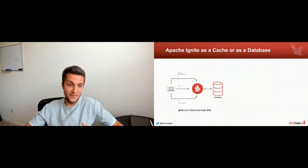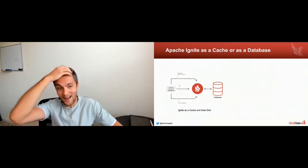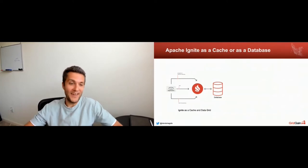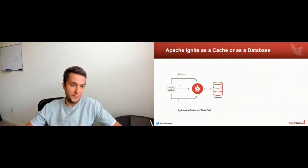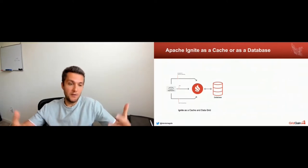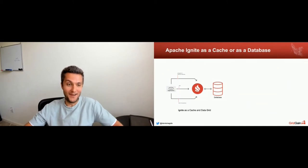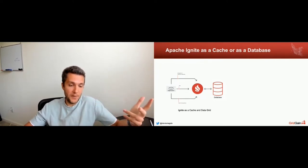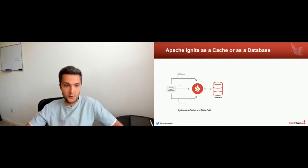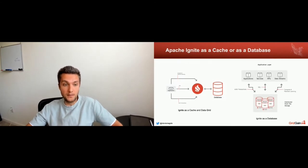There are two primary Ignite use cases. The first is Ignite as a cache: you have a database keeping all your primary records, you have your application, and you deploy Ignite as a distributed in-memory cache between your application and the database. You'd choose Ignite over Redis if you need SQL API, transactions, or compute. The second use case is Ignite as an in-memory database, where instead of a third-party database, you use Ignite native persistence across the cluster.